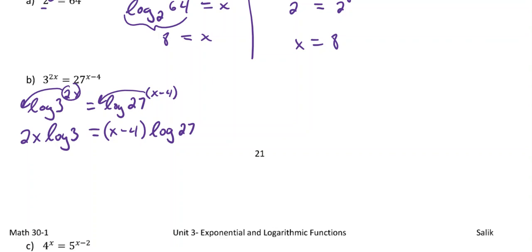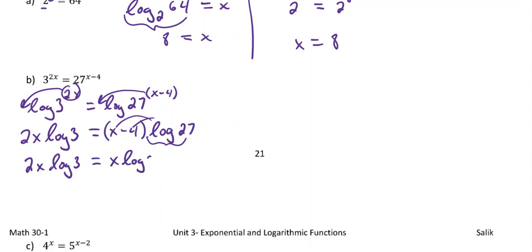We'll rewrite this now as 2x times log base three is equal to x minus four in brackets times log 27. Now we just have to solve for x. This log 27 — don't be intimidated by that. That's just a number. If that was like the number three, you would expand it into your brackets. We're going to do the same thing here. So let's expand log 27 into those brackets: 2x times log three is equal to x times log 27 minus four times log 27.